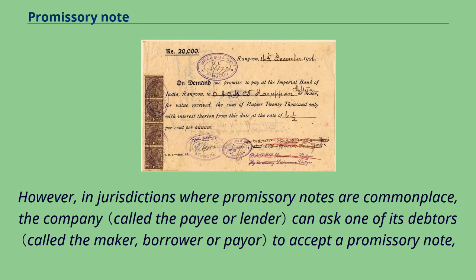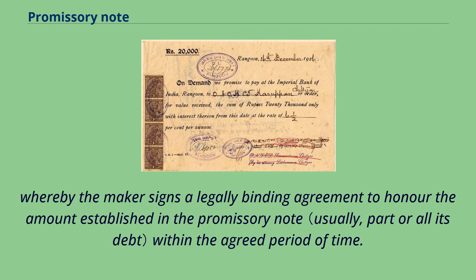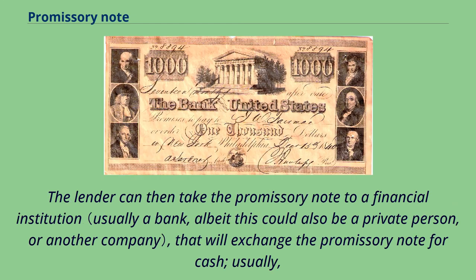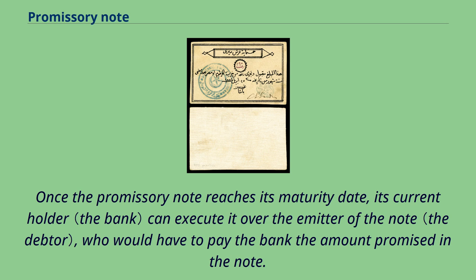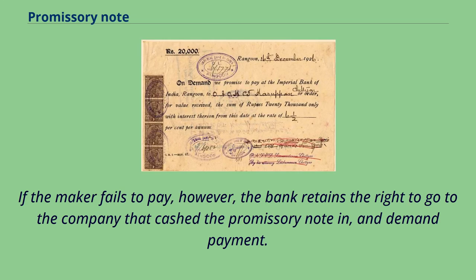However, in jurisdictions where promissory notes are commonplace, the company can ask one of its debtors to accept a promissory note, whereby the maker signs a legally binding agreement to honor the amount established within the agreed period of time. The lender can then take the promissory note to a financial institution that will exchange it for cash. The promissory note is cashed in for the amount established, less a small discount. Once the promissory note reaches its maturity date, its current holder can execute it over the emitter of the note, who would have to pay the bank the amount promised. If the maker fails to pay, however, the bank retains the right to go to the company that cashed the promissory note and demand payment.